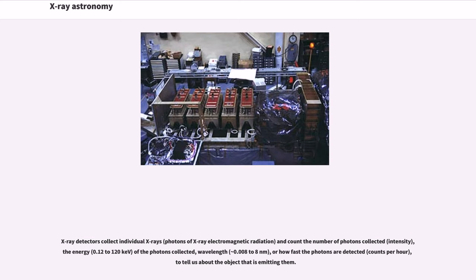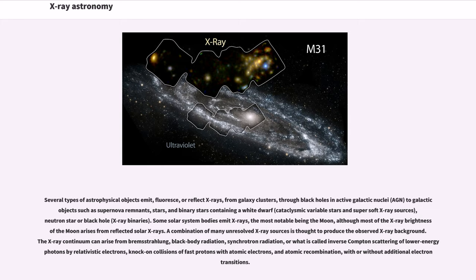X-ray detectors collect individual X-rays and count the number of photons collected, the energy of the photons collected, wavelength, or how fast the photons are detected. Several types of astrophysical objects emit, fluoresce, or reflect X-rays, from galaxy clusters through black holes in active galactic nuclei to galactic objects such as supernova remnants, stars, and binary stars. The X-ray continuum can arise from bremsstrahlung, black body radiation, synchrotron radiation, or inverse Compton scattering of lower energy photons by relativistic electrons.